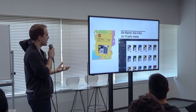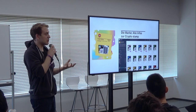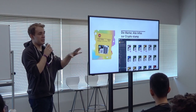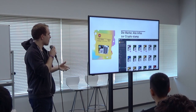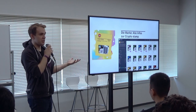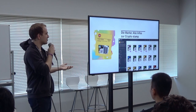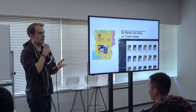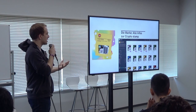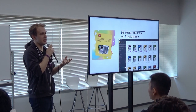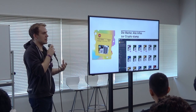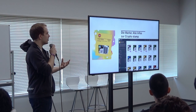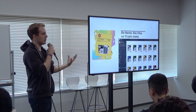Another interesting NFT project is CryptoStamp, because it was coupled to a physical stamp. The Austrian Postal Service created a line of collectible stamps where purchasing one gave you a real usable stamp plus a crypto collectible you could trade on an open marketplace. This was an interesting way to engage an existing community of stamp collectors in digital assets, and we expect to see a lot more of that kind of tethering of virtual assets to real-life physical assets.